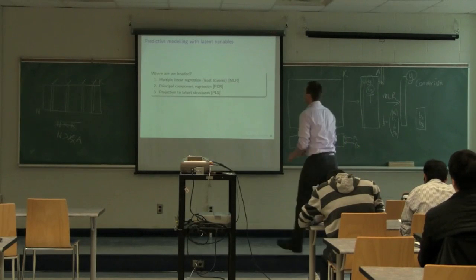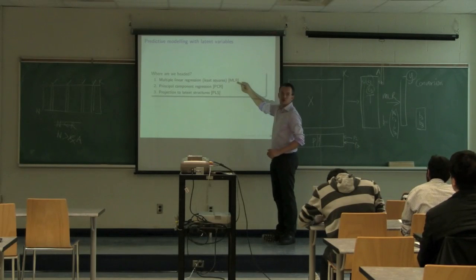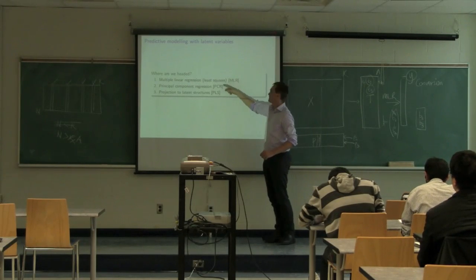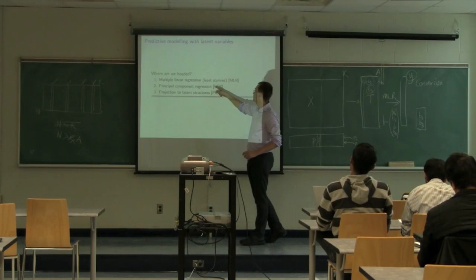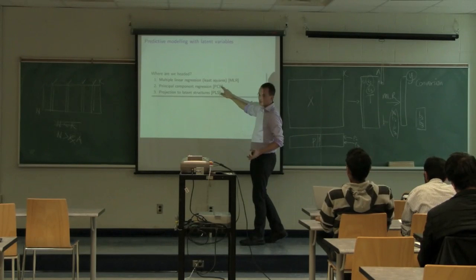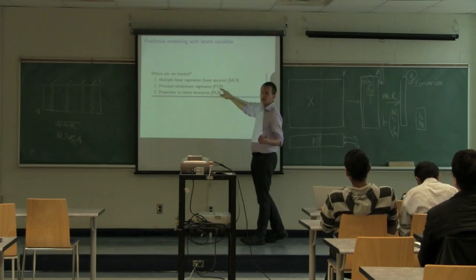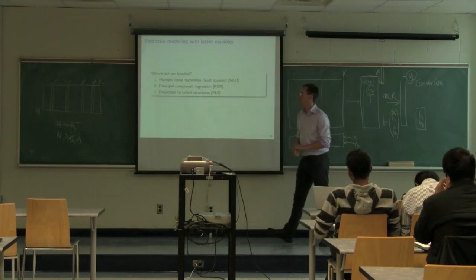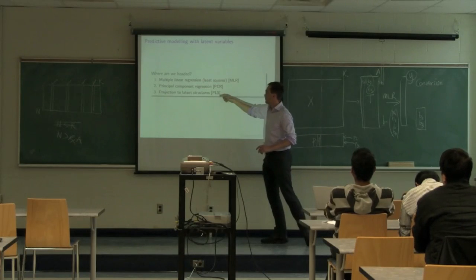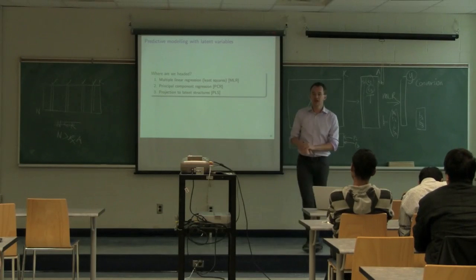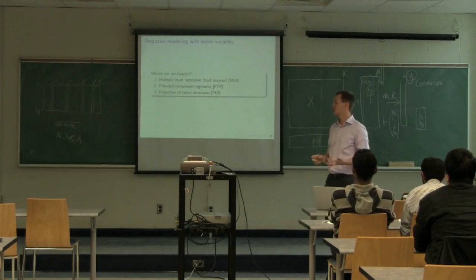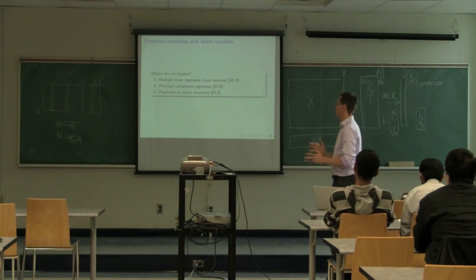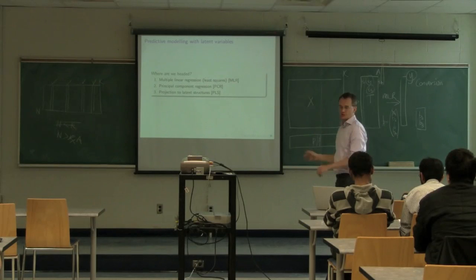So where we're going: we've looked at multiple linear regression with two blocks of data, seen its problems, then PCR gets us much further. But PCR has disadvantages of interpretability and can't handle more than one Y column. So next we'll look at Projection to Latent Structures — PLS, also called Partial Least Squares. I'll talk a little more about the two names later.